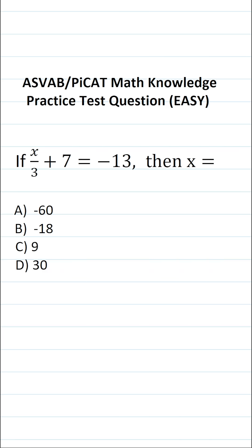This math knowledge practice test question for the ASVAB and PiCAT says if x over 3 plus 7 equals negative 13, then x equals.